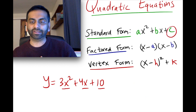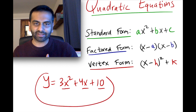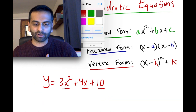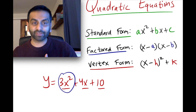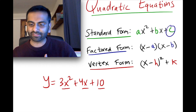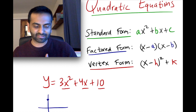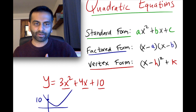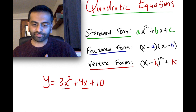This c over here is what we call the vertical intercept. If we were to graph this thing out, when x is 0, you get 3 times 0 squared — that drops — 4 times 0 — that drops — and you're left with just 10. So c is just the value of y when x is 0. It's the y-intercept, like the b in mx plus b. That's standard form.